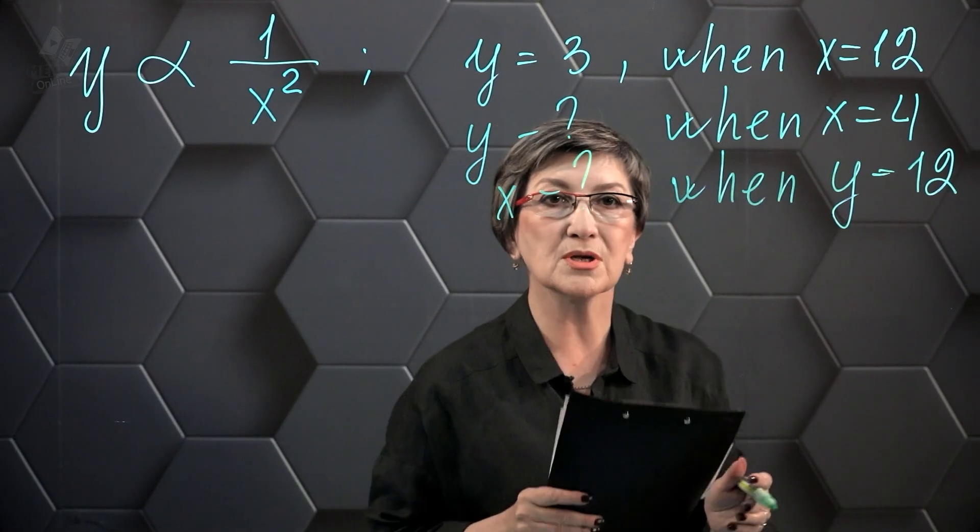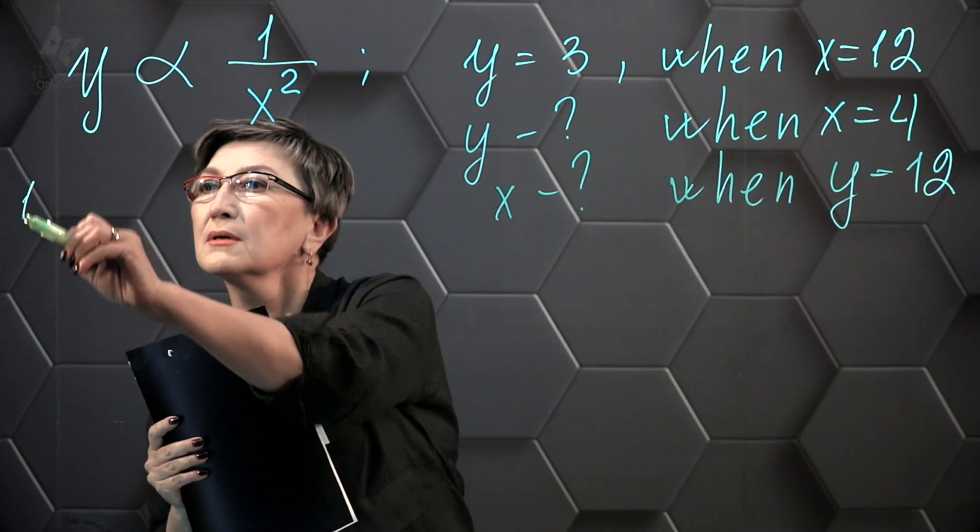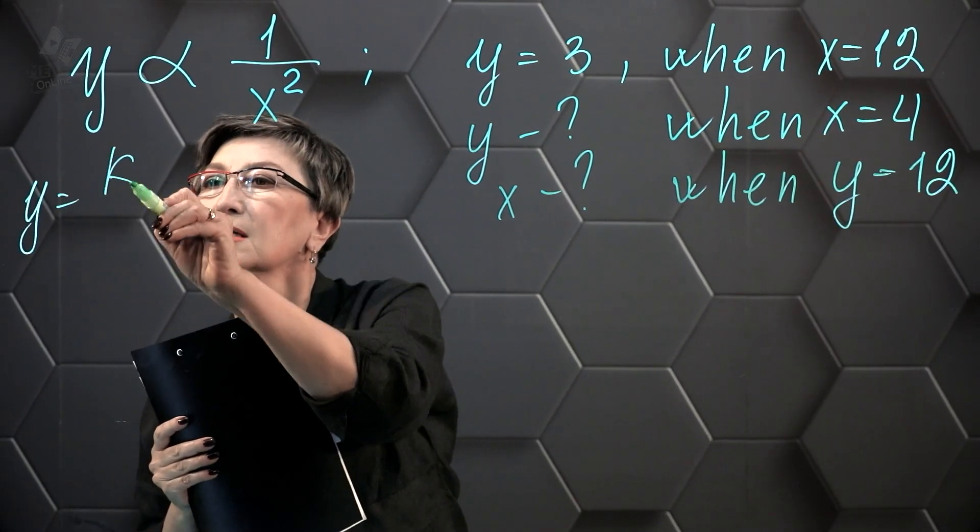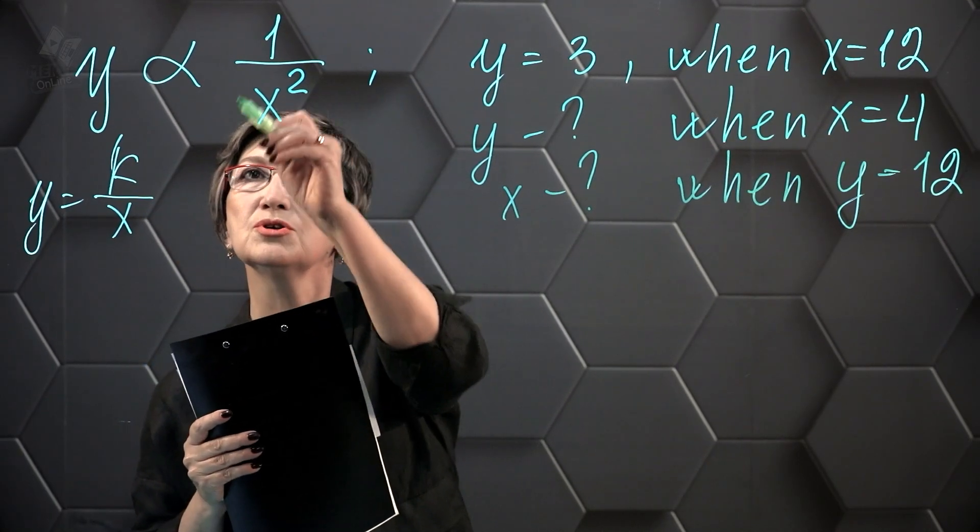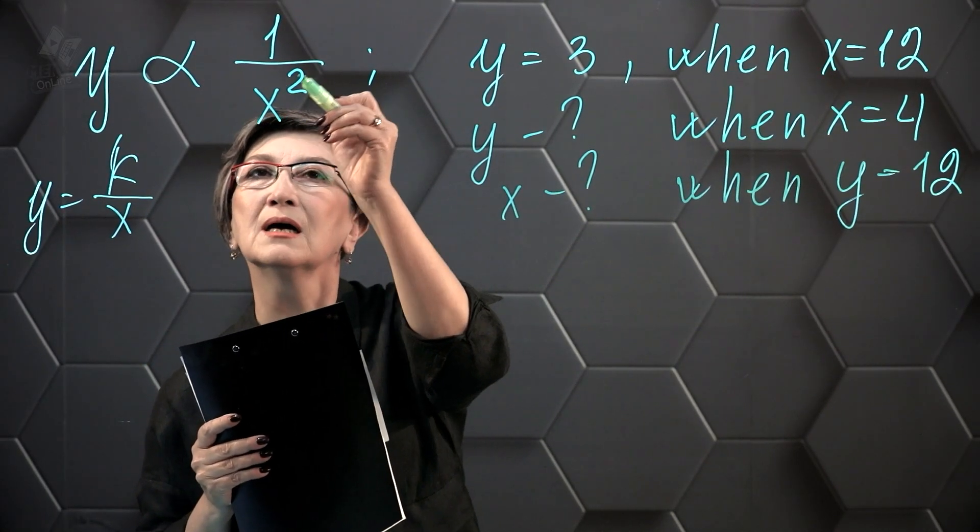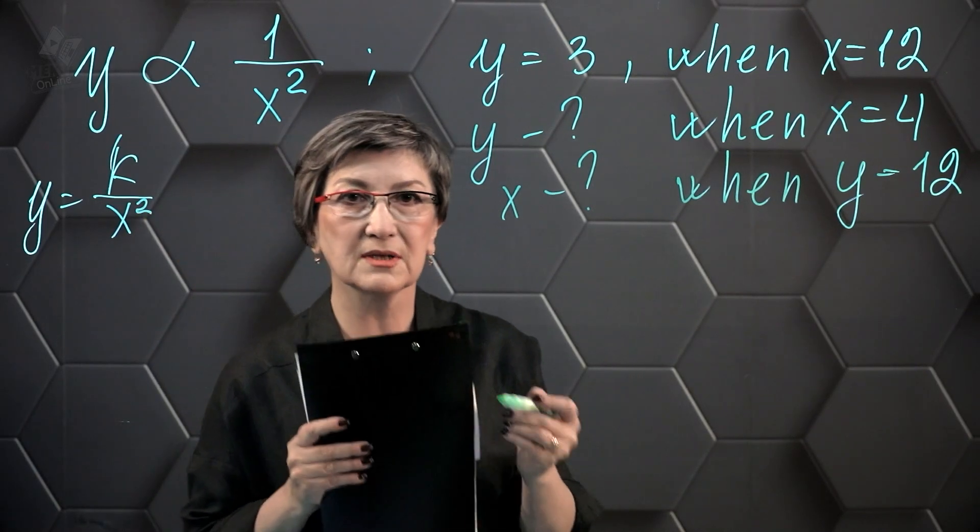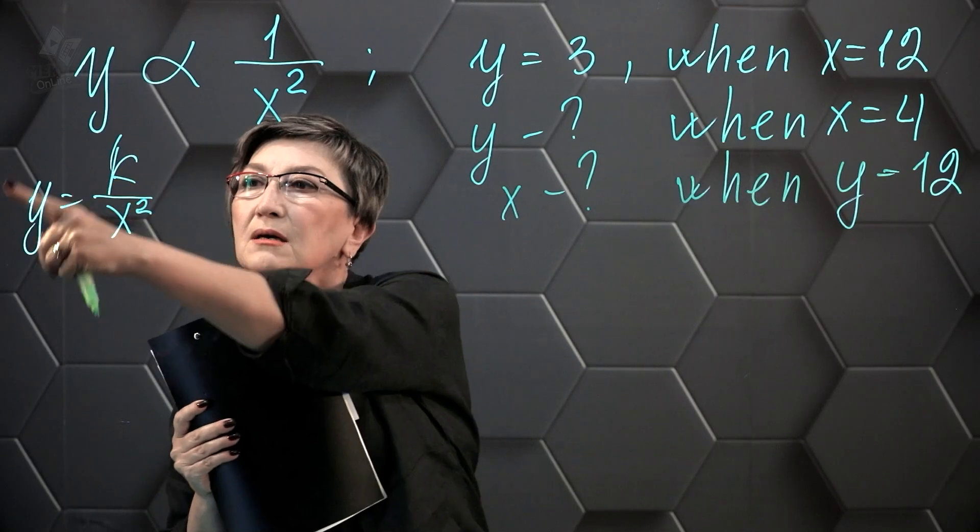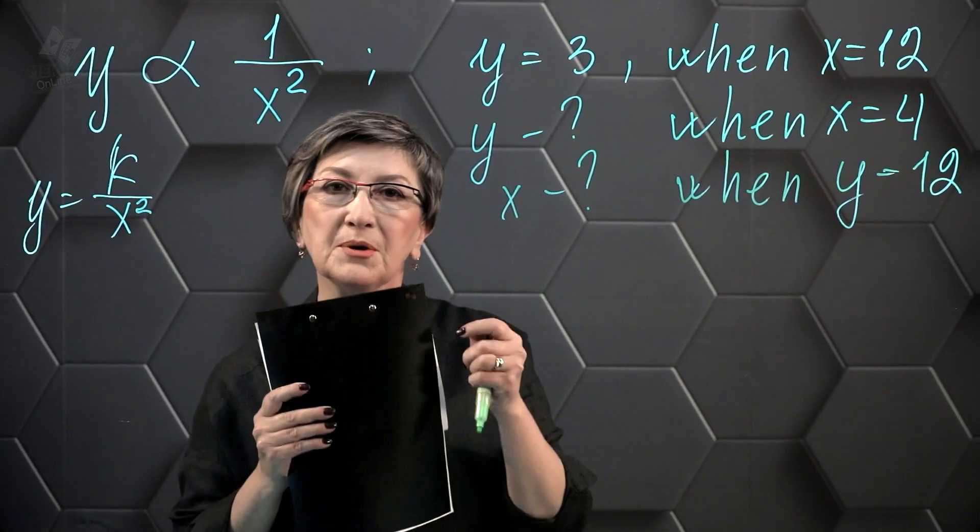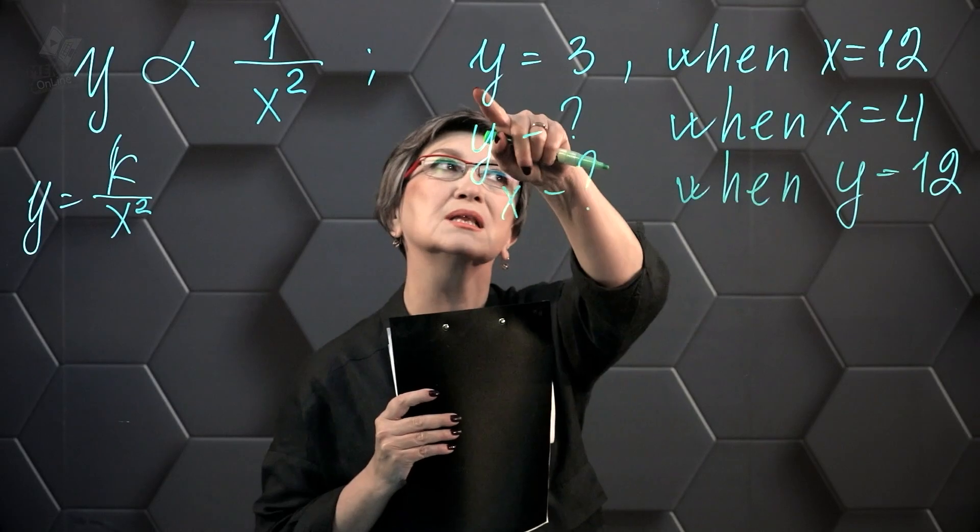Let's solve this problem using the rule of inverse proportionality. Y equals K divided by X. But in our case it is proportional to the square of X, so I write X squared. Now we are going to put our data into this formula, and first of all we find the value of the inverse proportionality factor.